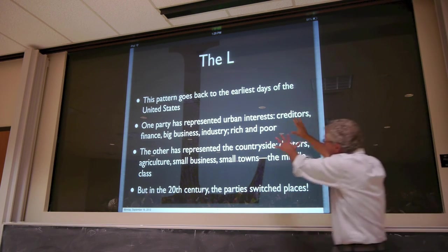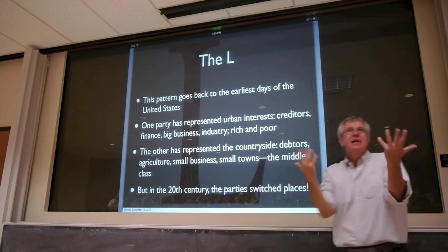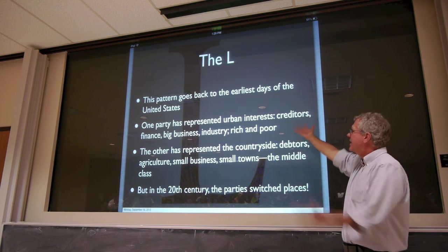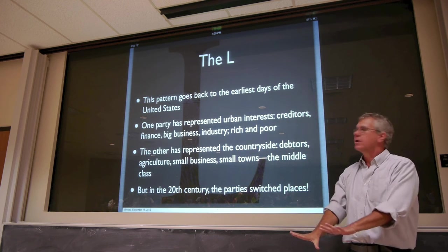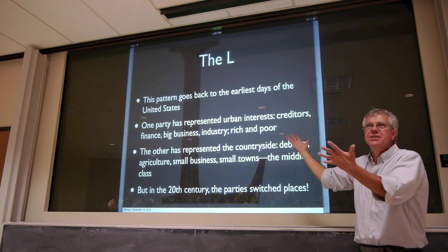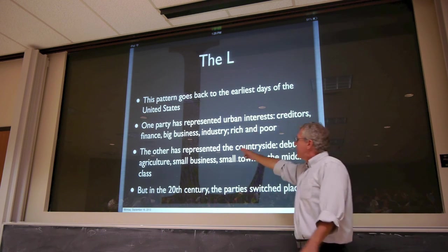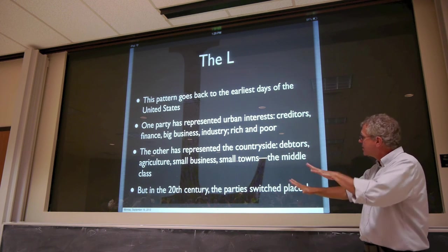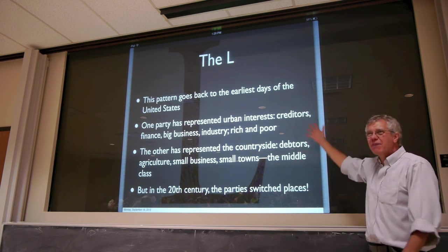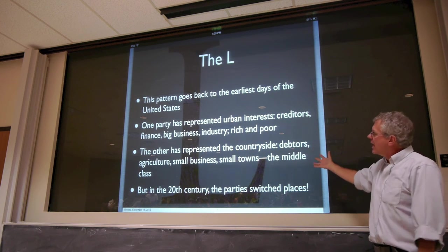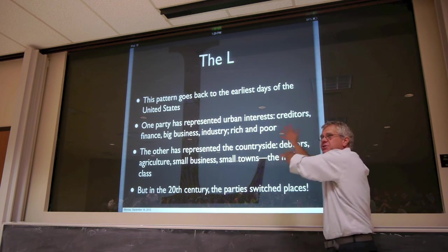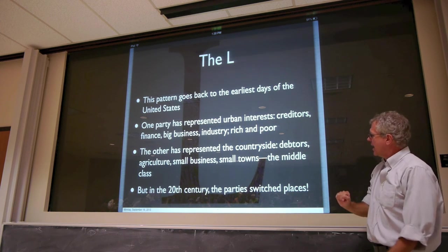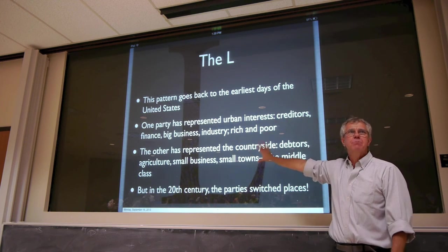Throughout our history, one political party has represented what you might think of as urban interests — creditors, finance, big business, industry, the rich but also the poor, whoever congregates in cities. And the other represents the countryside: debtors, agriculture, small businesses, small towns — what you might roughly think of as the middle class. These are very rough pictures with a lot of complexity, but nevertheless, I think there's some truth to this picture.